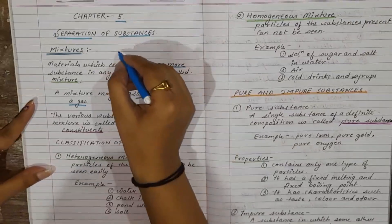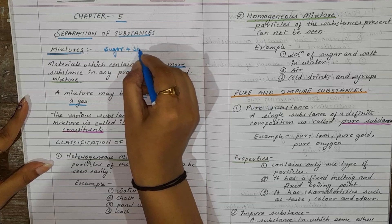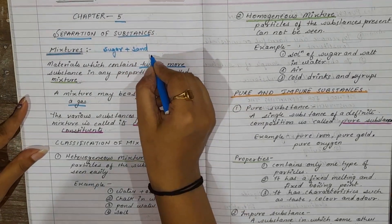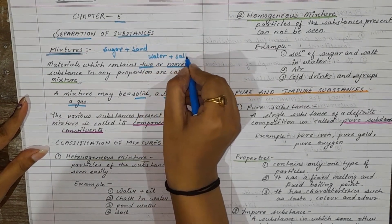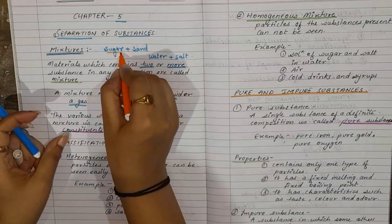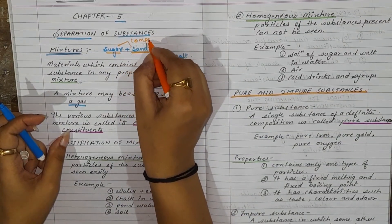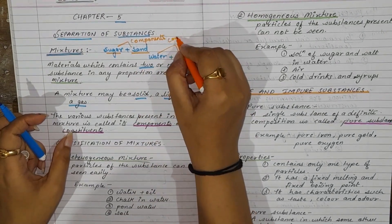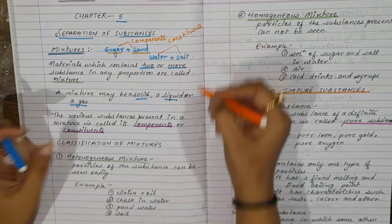Suppose I have a mixture of sugar and sand, and another mixture of water and salt. In the mixture of sugar and sand, sugar and sand both are the components, or we can say constituents, of the mixture.